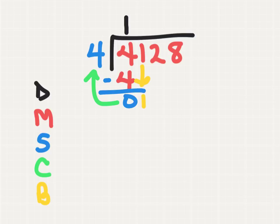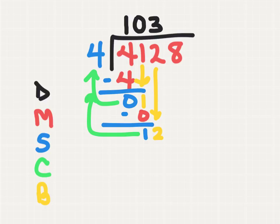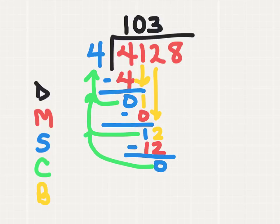We go back to the dividing step. How many groups of 4 can I make from 1? I can't, so this is 0. 0 times 4 is 0. 1 minus 0 leaves me with 1. I compare 1 to 4 — it is less. And I bring down the 2. Now, how many groups of 4 can I make from 12? The answer is 3. 3 times 4 is 12. When I subtract 12 from 12, I get 0.